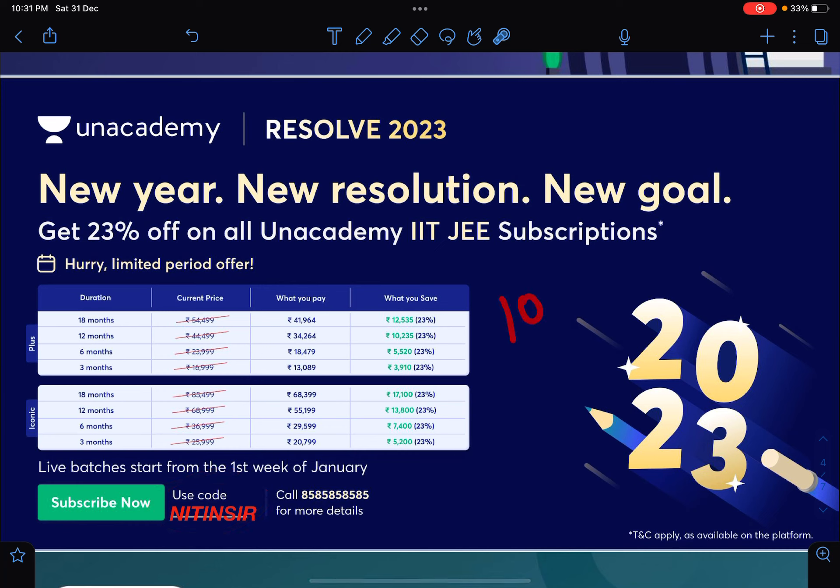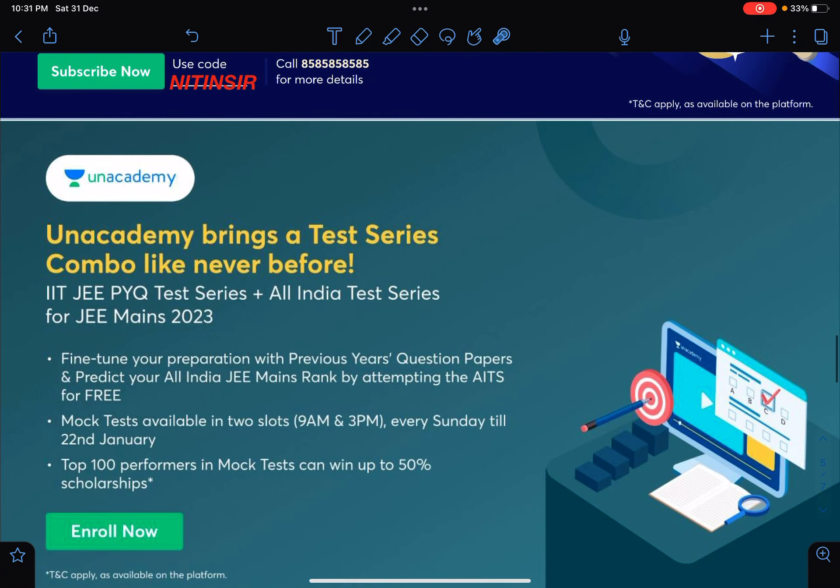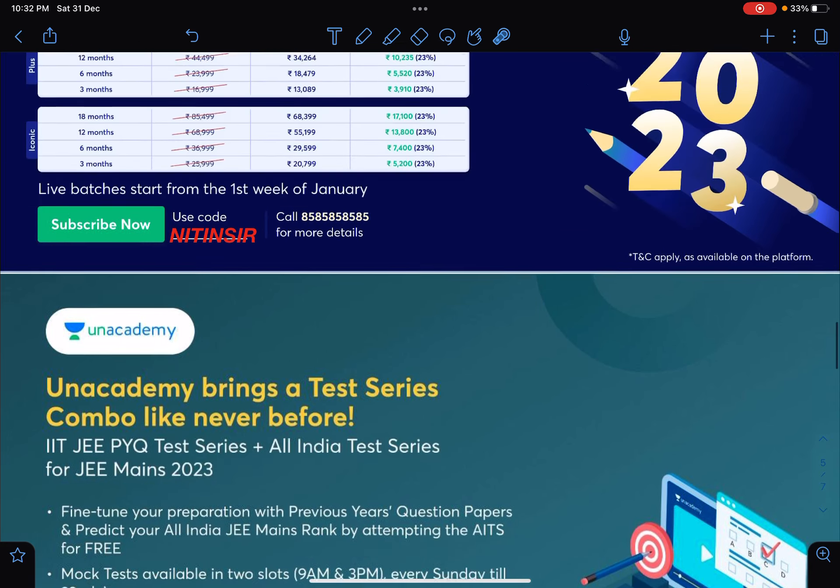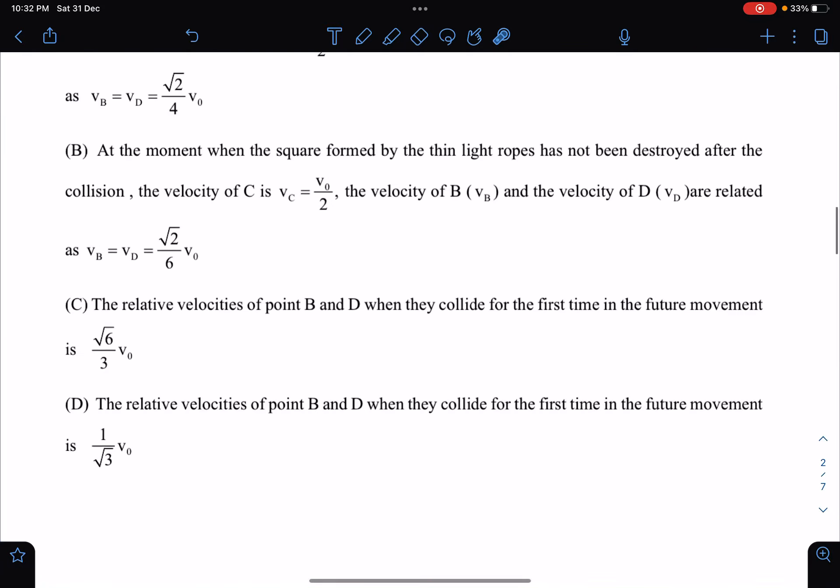This is about JEE Mains test series, PYQ test series, as well as Mains test series for 2023. Mock tests are available in two slots, 9 AM to 3 PM every Sunday till 22nd of January. Top 100 performers in mock tests can get up to 50% scholarship. You can definitely boost your JEE preparation using Unacademy resources.